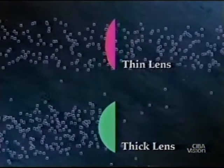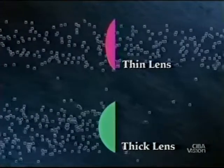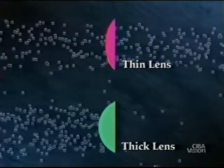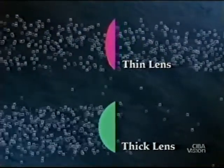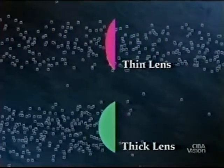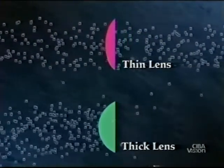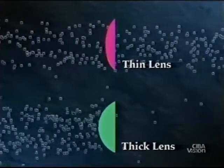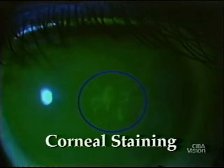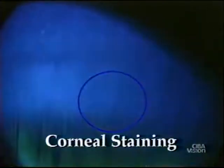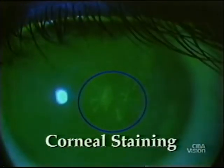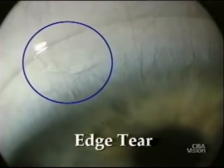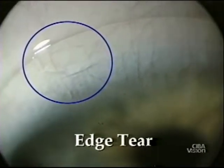Lens thickness affects corneal health by controlling the amount of oxygen passing through the lens. It also affects handling, durability and comfort. Very thin, high water content soft lenses may cause corneal drying and staining. They are also more prone to damage.